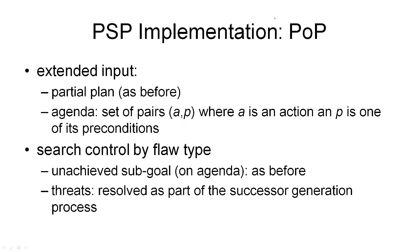The input to the UC Pop Planner looks slightly different from what we've seen so far. We have an extended input that takes a partial plan — the same initial plan we've seen before — and the second component is an agenda of things that still need to be done. This is a set of pairs of actions and preconditions of these actions, representing all the open goal flaws in the current partial plan. Initially, that is all the preconditions of the goal dummy action. The agenda is simply the way to avoid recomputing the open goals every time we go through the loop, where the loop is implemented as a recursive function.